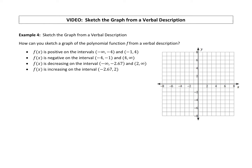Let's sketch a graph from a verbal description. How can you sketch a graph of the polynomial function f from a verbal description? So first, we'll outline this with steps so we have some things to look back on. Step one: let's identify or estimate the x-intercepts.